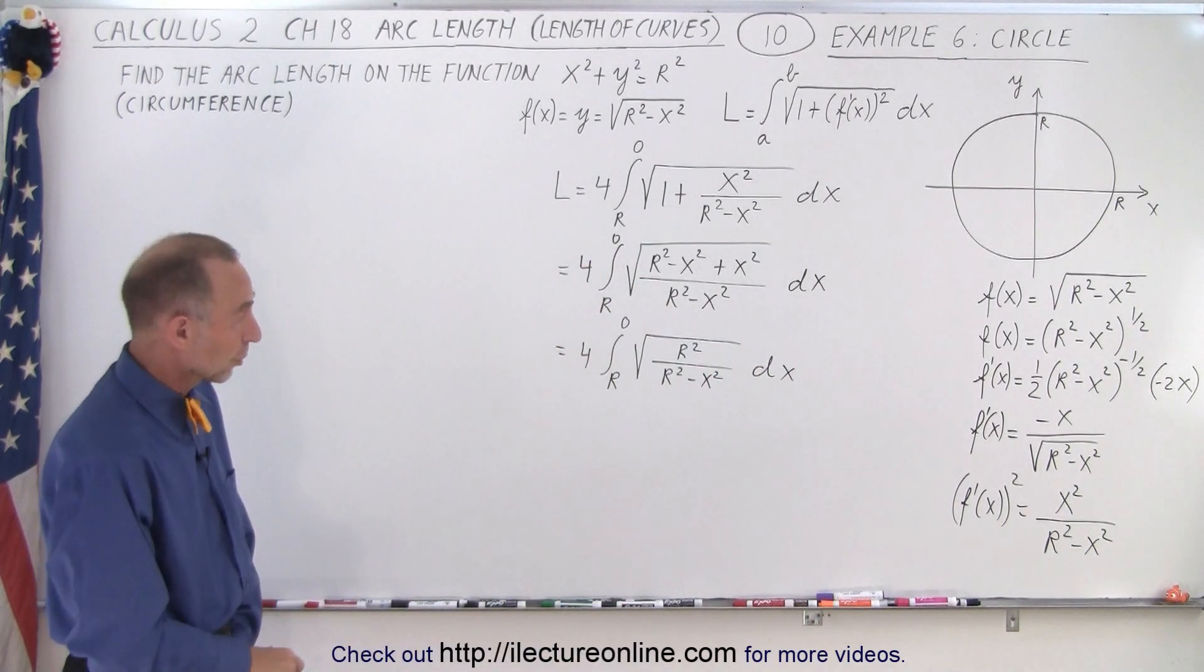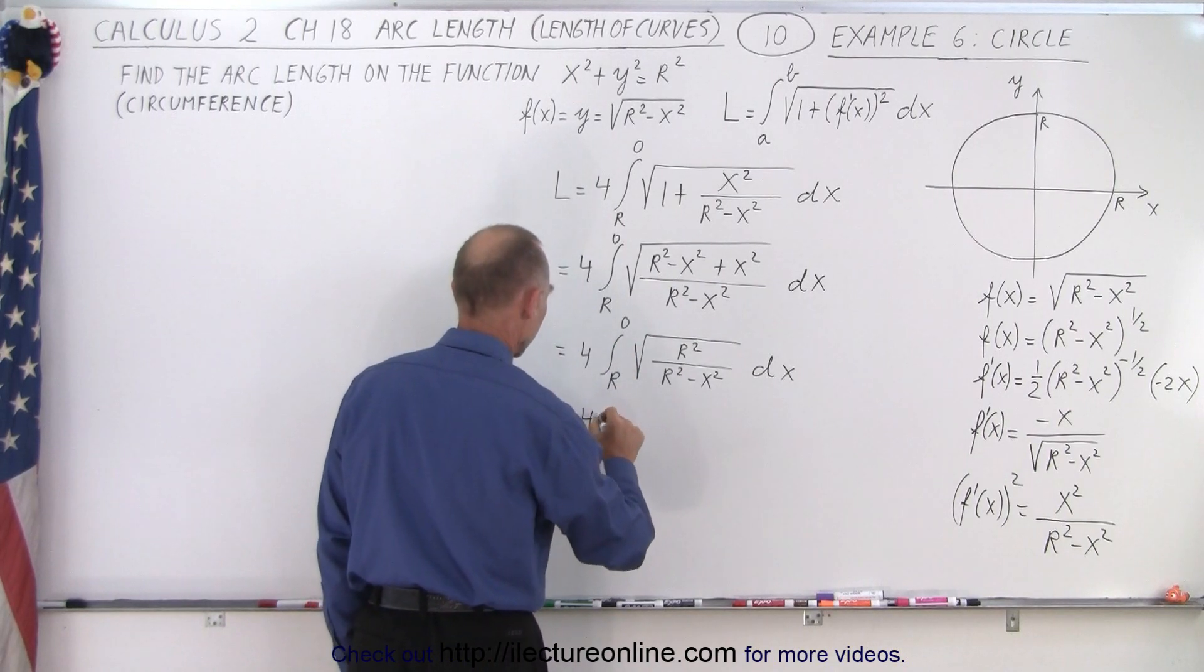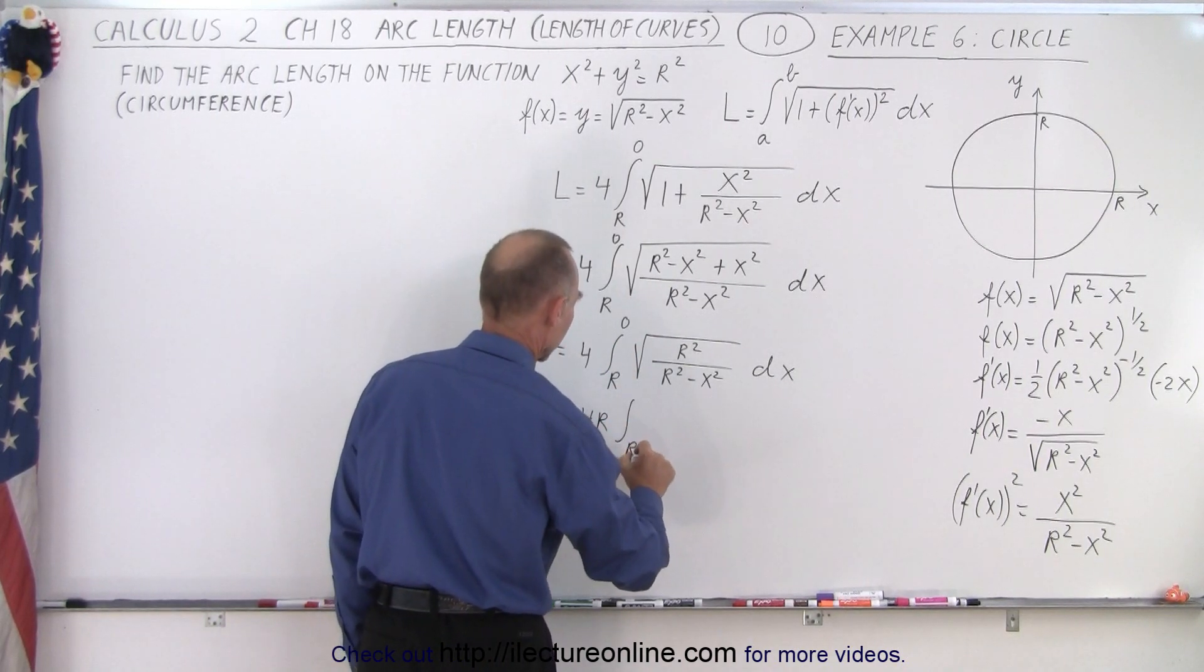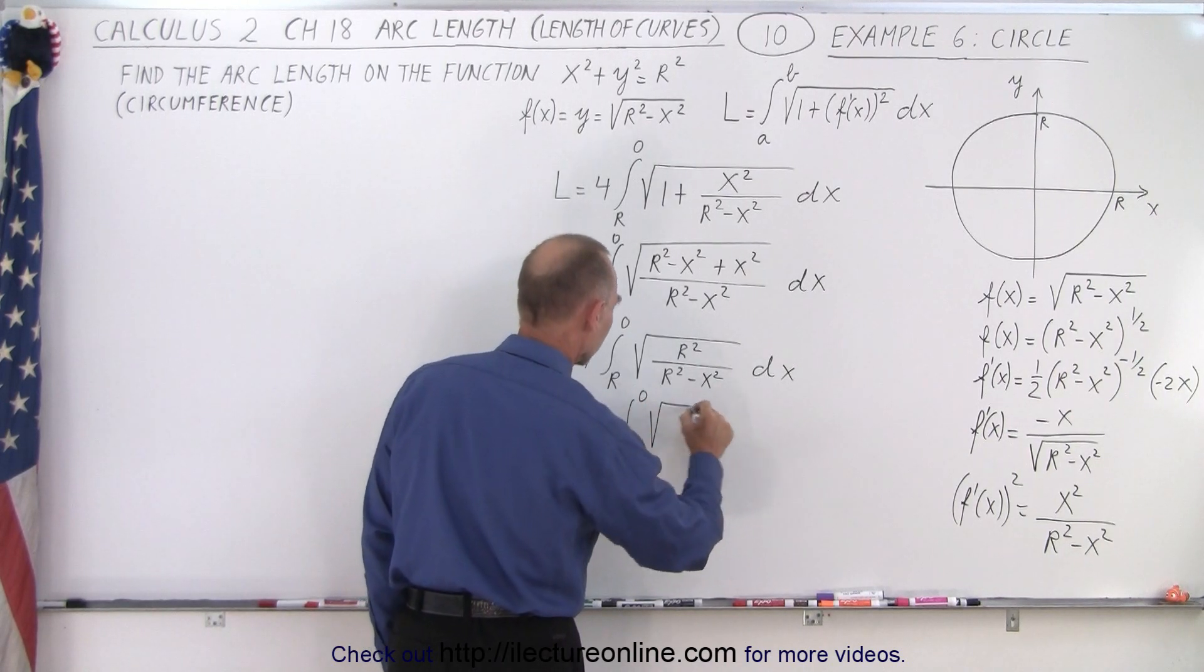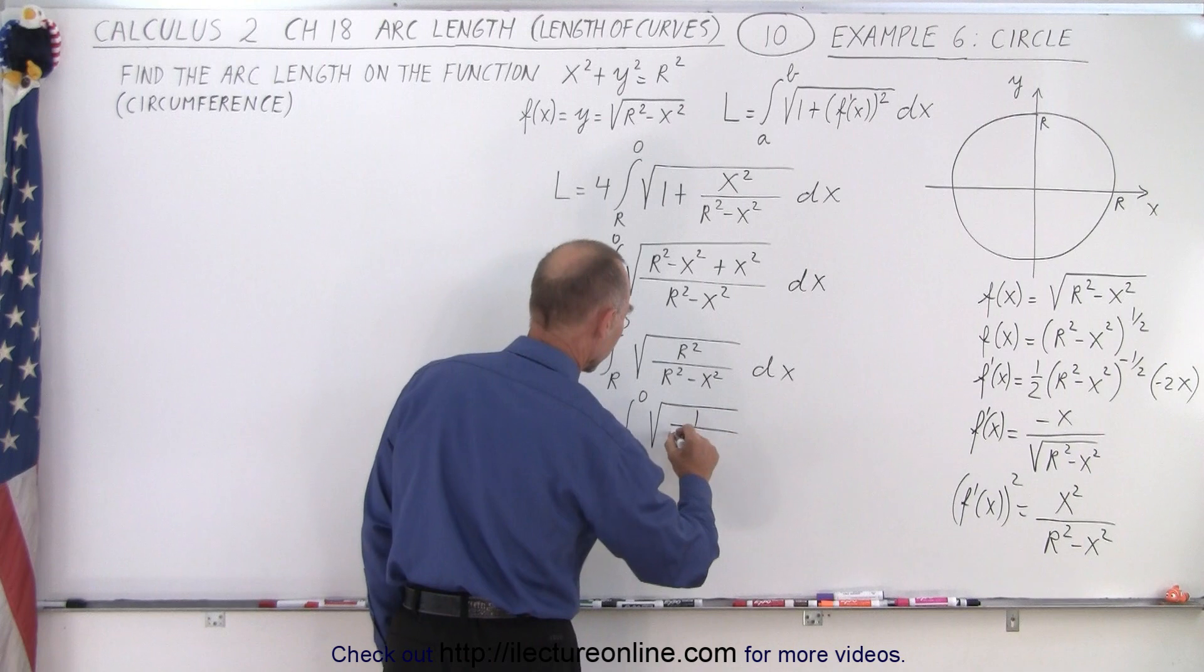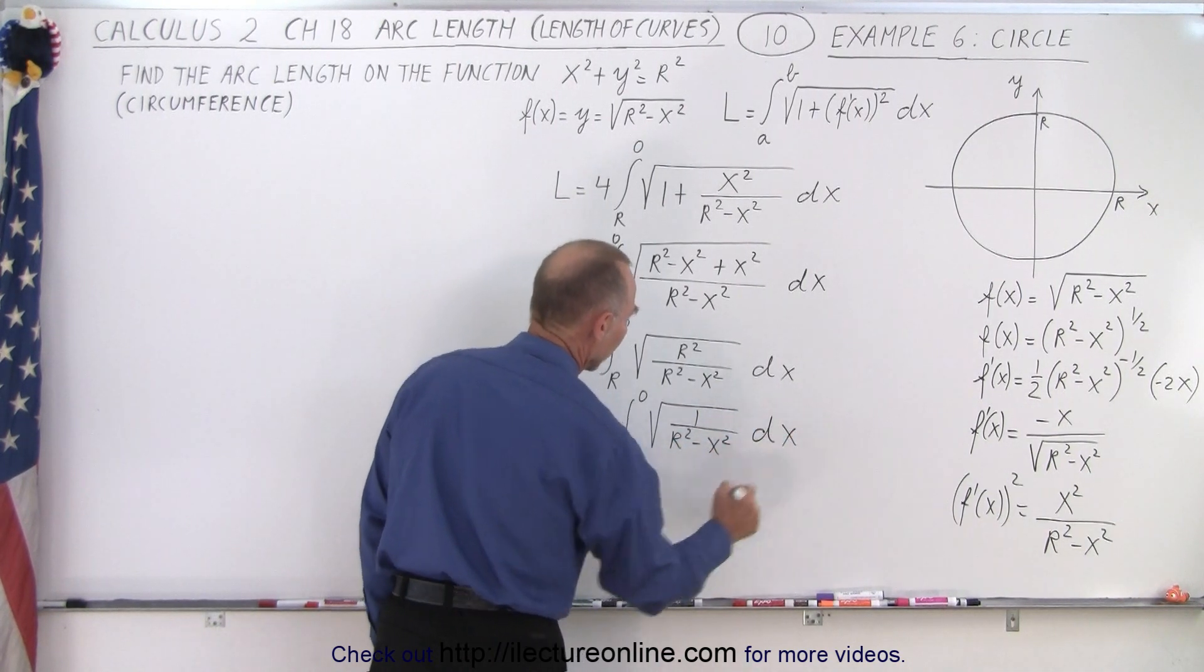And now we can factor out the r² in the numerator, so we'll bring that over here, so this is equal to 4r times the integral from x equals r to x equals 0, and then we have the square root of 1 over r² - x² times dx.